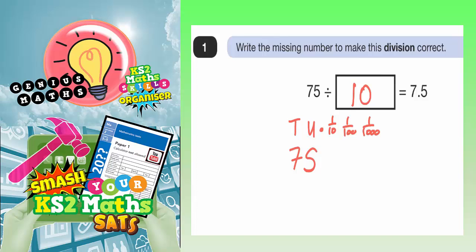And then after tens going this way, we'd have hundreds, thousands, tens of thousands, hundreds of thousands, millions. So we're trying to get from 75 to 7.5. If you're going from 75 to 7.5, then the digits have moved backwards. So 7.5 will be 7 units and 5 tenths, and obviously your decimal point is there.